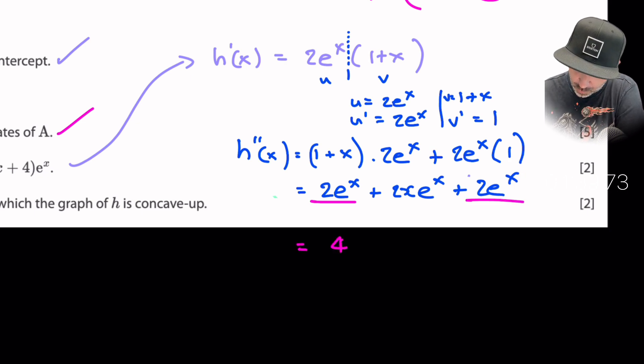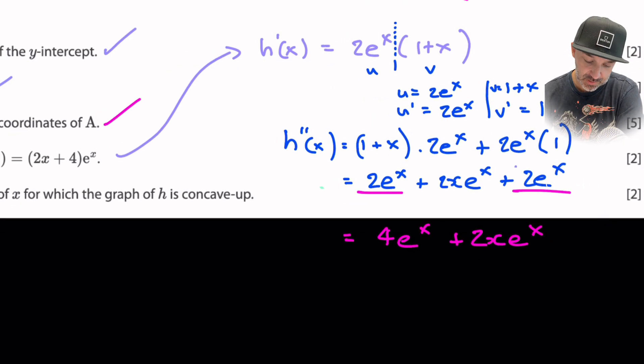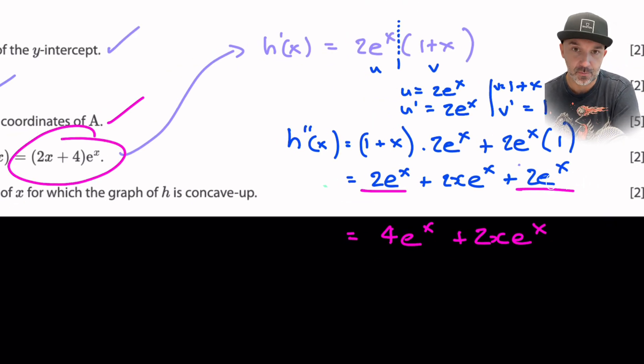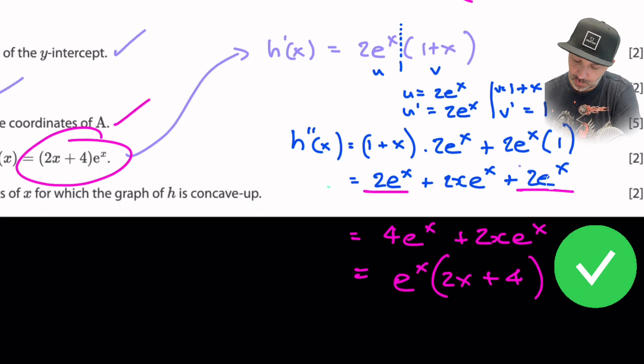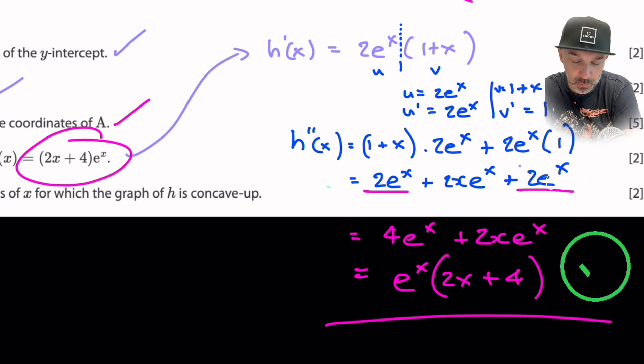So we got 4e^x + 2xe^x and this is where you can sort of use the answer to sort of help guide you now make sure you've got everything correct. I can see that they can take out an e^x on both sides and inside we would have 2x + 4 which is the end of that question. So we have managed to differentiate it twice.